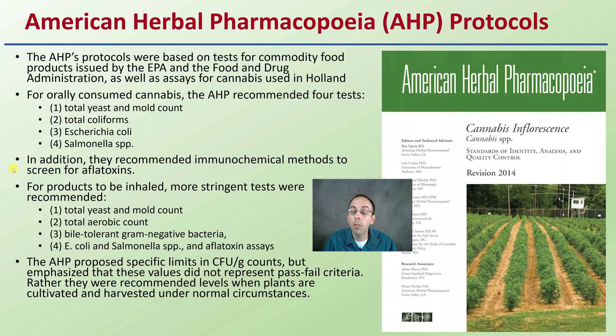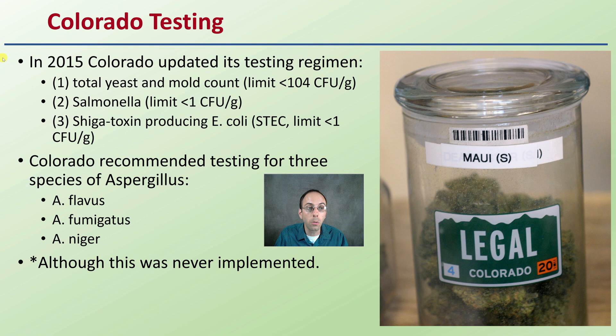Looking at Colorado as another example: in 2015, Colorado updated their testing regimen with limits for total yeast and Salmonella. This does not mean the product contains no Salmonella or no yeast — they simply set a threshold you need to be under. There were also recommendations to test for three species of Aspergillus, although that was never implemented. You need to look at what's proposed, what's implemented, and what is required, and realize these may change year to year — so you have to stay current with whatever testing is required by your state or agency.